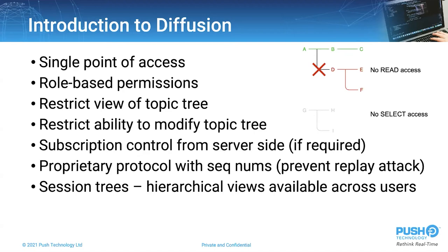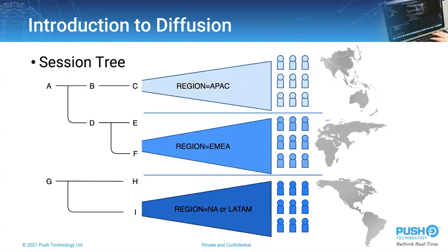This brings us to Diffusion's concept of session trees. With session trees, client sessions can be grouped such that they inherit attributes in a hierarchical fashion. These attributes can be defined on demand as needed, allowing for entire geographies or brands to be managed in a simple yet efficient way. Here is an example of a session tree using a property called region. Any number of properties can be defined or combined to make managing a global user base very simple yet effective.